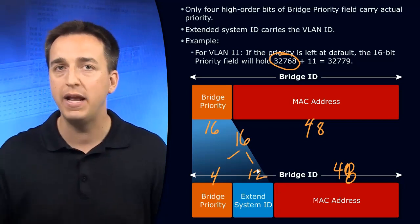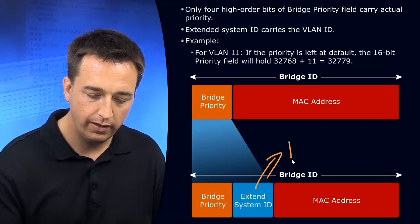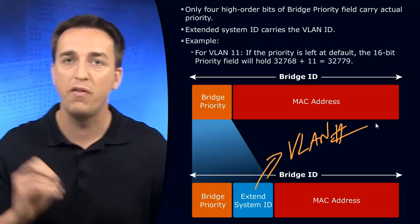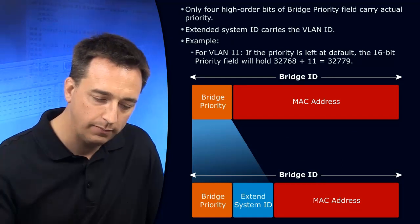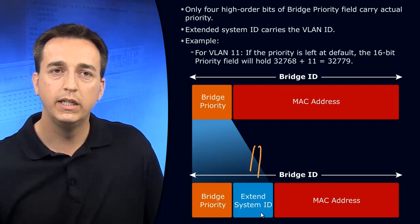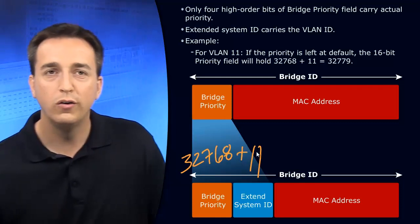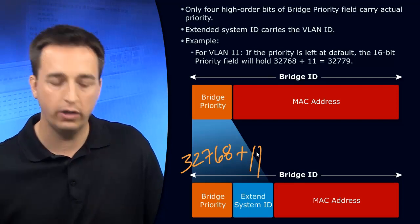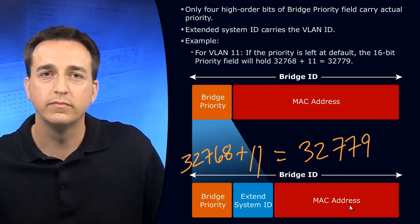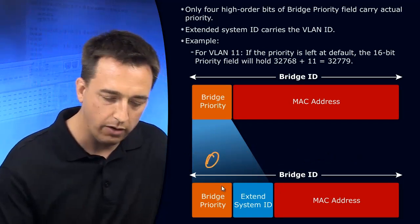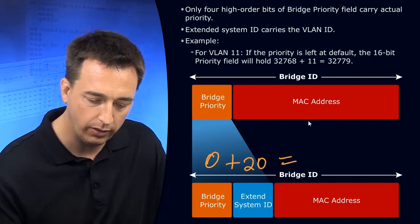Combined, they make up the Bridge Priority. The extended system ID is simply the VLAN number. So if you had VLAN 11 and the Bridge Priority was the default 32,768, add them together and your new Bridge Priority equals 32,779. If the Bridge Priority was 0 and the extended system ID was for VLAN 20, then 0 plus 20 equals a Bridge Priority of 20.